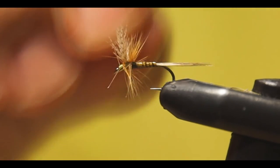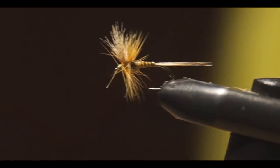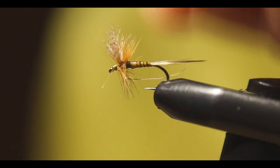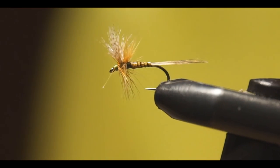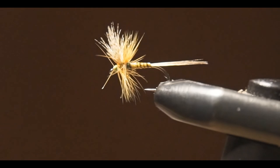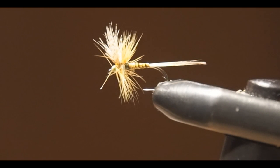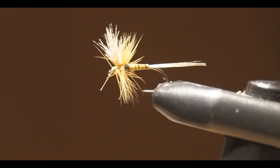So here we have an olive dun which represents a scambus mayfly which here in Switzerland is seen often during the grayling season and it's a very good fly.